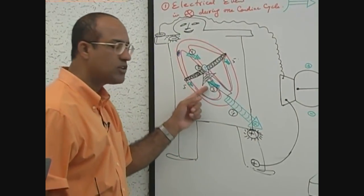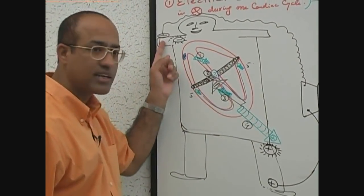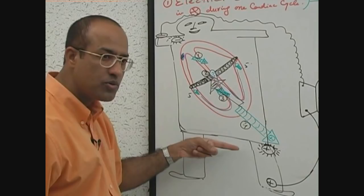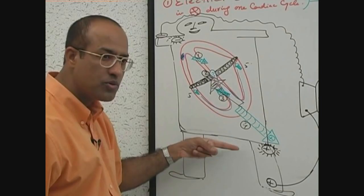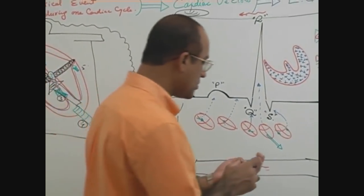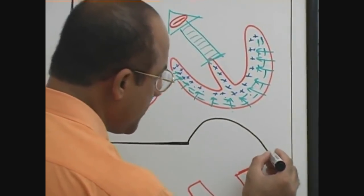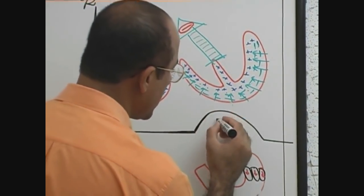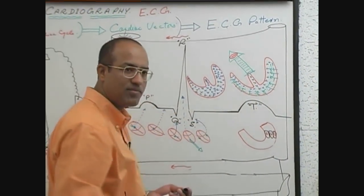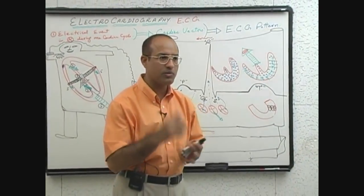The repolarization vector is a gradual, negative vector moving towards the negative electrode, so the needle moves positively but gradually. When the needle moves positively but gradually, a positive but gradual wave is produced during repolarization. This wave is called the T wave, and the T wave represents ventricular repolarization.